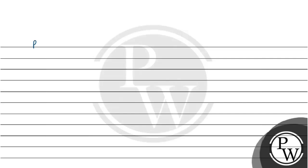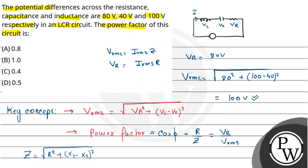Now power factor equals cos φ, which is equal to R by Z, which equals Vr by Vrms, which equals 80 by 100, which equals 0.8. So the power factor of the circuit is 0.8. Hope you understand. Best of luck.